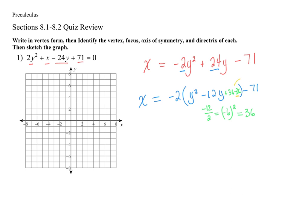I need this minus 36 to come out of the parentheses. In order for it to come out, it's being multiplied by negative 2. So negative 2 times negative 36 is positive 72 — that's how I get that 36 out of there. So now I basically have it in standard form. The negative 2 stays here, this becomes (y − 6)², and on the outside I combine negative 71 and positive 72 to get plus 1.